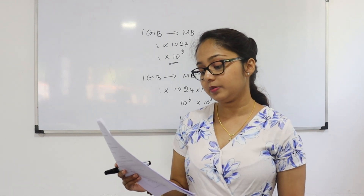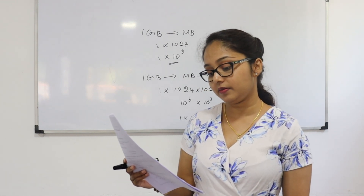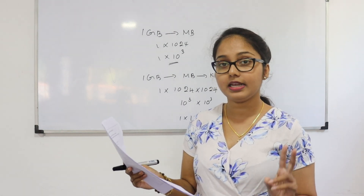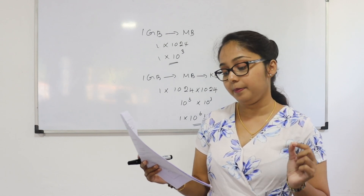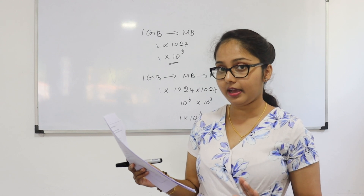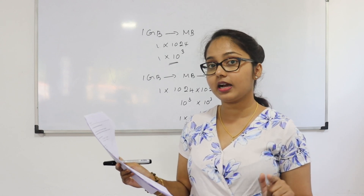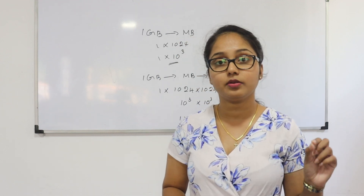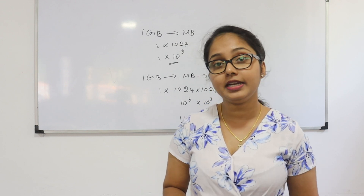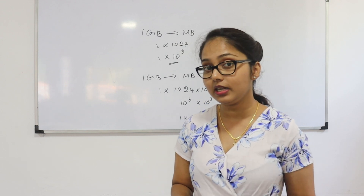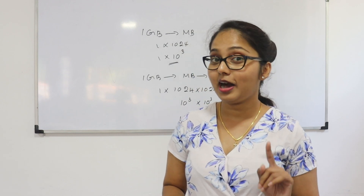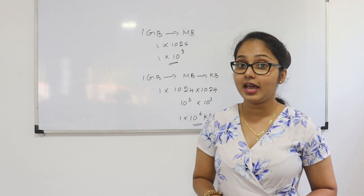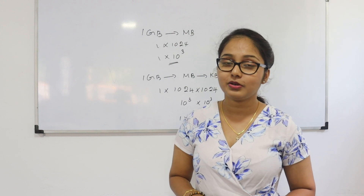Which of the following answers describes the data access speed of storage devices in ascending order? In ascending order of speed: hard disk, flash memory, then main memory (RAM). Answer number 4. That concludes our discussion of the questions. This is the end of the video.